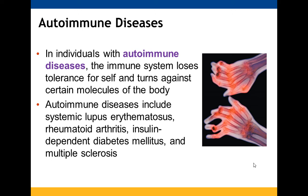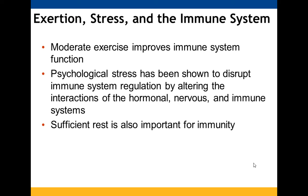In autoimmune diseases such as lupus, rheumatoid arthritis, type 1 diabetes, and MS, the immune system fails to recognize self and starts attacking the body's own molecules. Exercise and rest are thought to improve immune function, while psychological stress negatively affects the immune system, hormones, and nervous system.